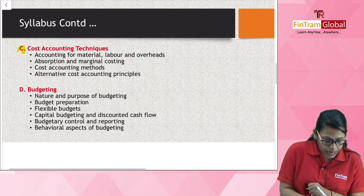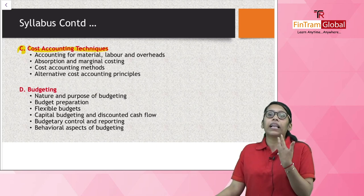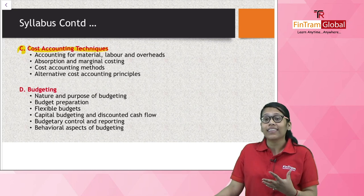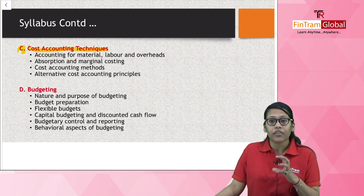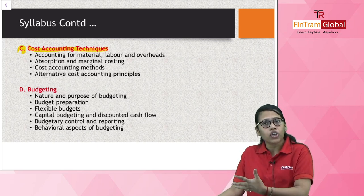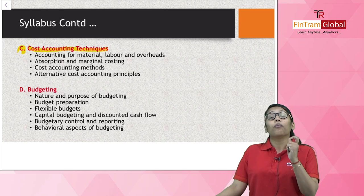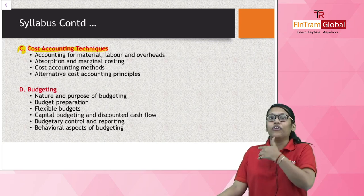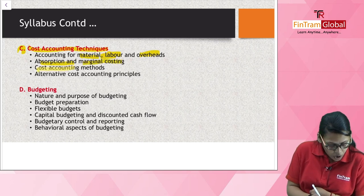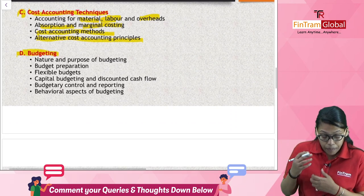The next section is Section C — Cost Accounting Techniques. This is core management accounting: how you can calculate cost. We will understand the bifurcation of cost — what is material, what is labor, what is overhead — and how accounting is done for each of these. We will also understand how cost is calculated in a manufacturing organization and where batch costing is implemented. Topics include: accounting for material, labor, overhead, absorption and marginal costing, cost accounting methods, and alternative cost accounting principles.